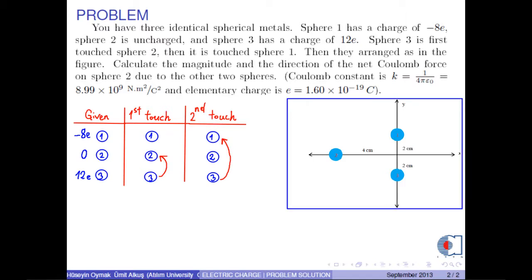Calculate the magnitude and direction of the net Coulomb force on Sphere 2 due to the other two spheres. Coulomb constant is K equal to 8.99 times 10 to 9 Nm squared over Coulomb squared and elementary charge is e equals 1.6 times 10 to negative 19 Coulombs.